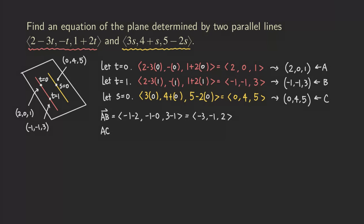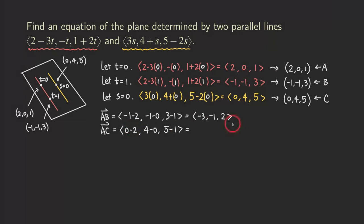The other vector is AC, with C as terminal point and A as initial point: zero minus two, four minus zero, five minus one — giving us the second vector (−2, 4, 4) lying in the plane.